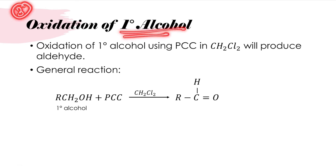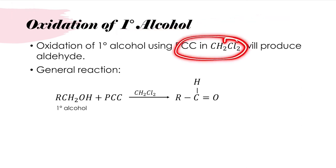We also already learned about oxidation of primary alcohol in the previous chapter, in which oxidation of primary alcohol will produce aldehyde by using PCC in CH2Cl2. This is the general reaction for oxidation of primary alcohol.